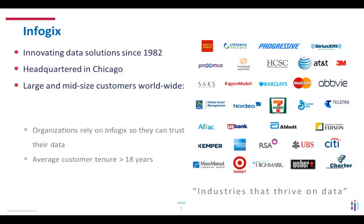Typically data impacts a business in three predominant ways: data used for analytics and insights, how it gets used for operational purposes within business processes, or how it's used to reduce risk from a compliance and regulatory standpoint. At InfoJix, we look at what data is critical to driving those business objectives. It typically comes down to about 1% to 2% of your data overall, which drives about 90% of the outcomes.